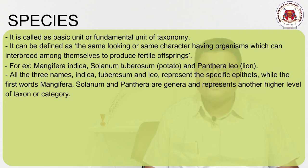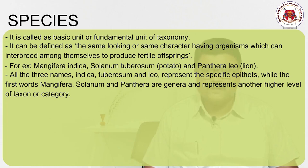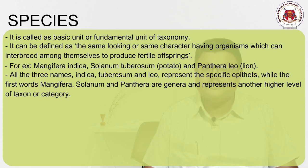For mango, Mangifera indica — 'Mangifera' is the genus name and 'indica' is the species name. For Solanum tuberosum — 'Solanum' is the genus name and 'tuberosum' is the species name. For lion, Panthera leo — 'Panthera' is the genus name and 'leo' is the species name or specific epithet. Similarly looking organisms with slight differences are still considered different species.